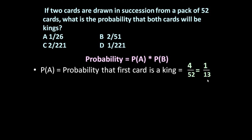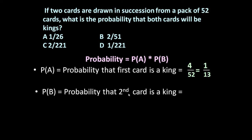Now one card has been drawn, so only 51 cards are left in the pack, and since the first card drawn was a king, only 3 kings remain. So PB — the probability that the second card is also a king — is 3/51, which equals 1/17.